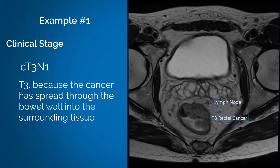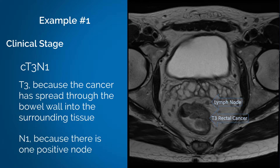T3 because the cancer has spread through the bowel wall into the surrounding tissue, and N1 because there is one positive node.